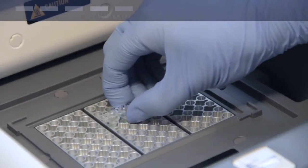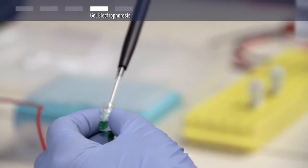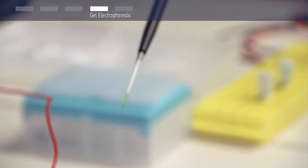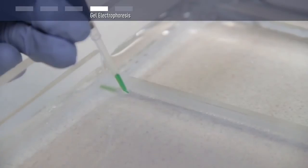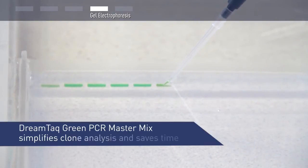After PCR, analyze products by gel electrophoresis. To do that, simply load 5 to 15 microliters of your PCR mixture directly on a gel. When working with DreamTaq Green PCR Master Mix, it is not necessary to add loading dye into the reaction mixture prior to electrophoresis. This simplifies clone analysis and saves time.